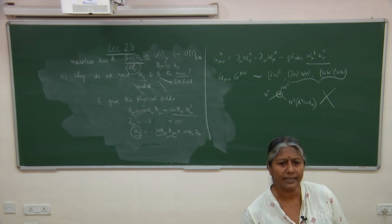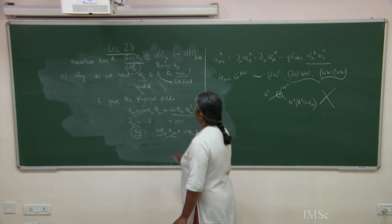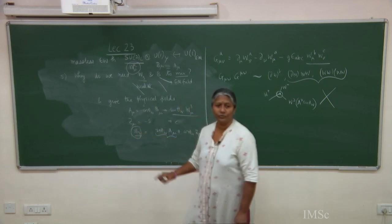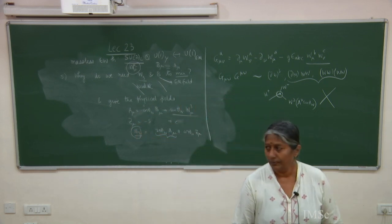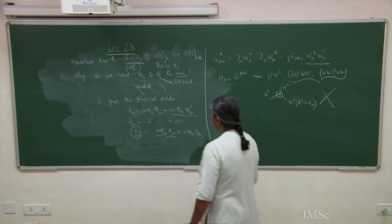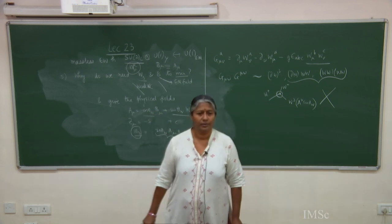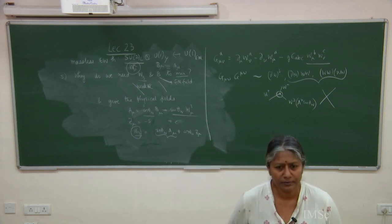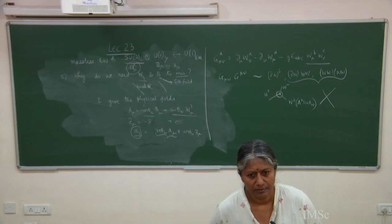That is why we had this complication in the neutral current sector: W_3 and B had to be rewritten in terms of new physical fields A and Z through the Weinberg mixing angle theta_W.